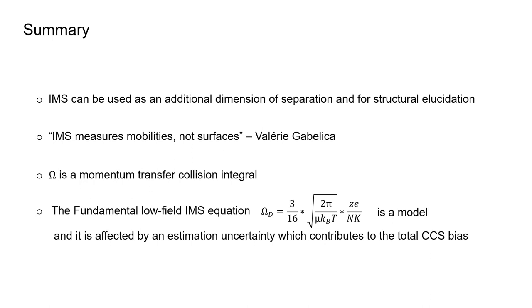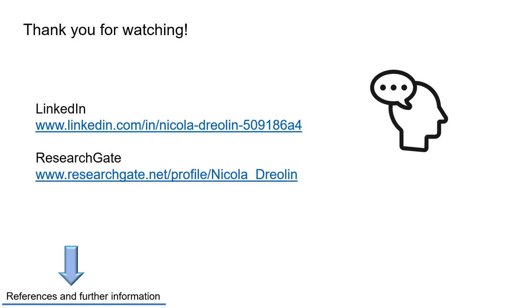The fundamental low-field ion mobility equation — also known as the Mason-Champ equation — is a model affected by bias, where estimation uncertainty plays a role in the derivation of CCS values. With this, I want to thank you for watching. In the next video, I will go through the methods for deriving CCS values in practice and give some insights on why the type of calibrant affects the CCS in traveling wave. Most of the concepts, figures, and formulae shown are referenced at the bottom of each slide. If you have any comments, considerations, or suggestions, please get in touch — you can also find me on LinkedIn and ResearchGate. Ciao!